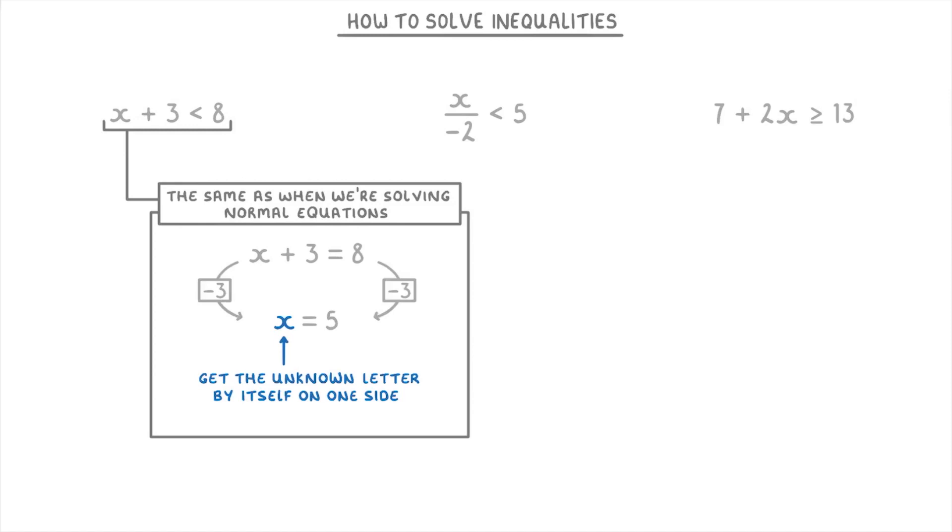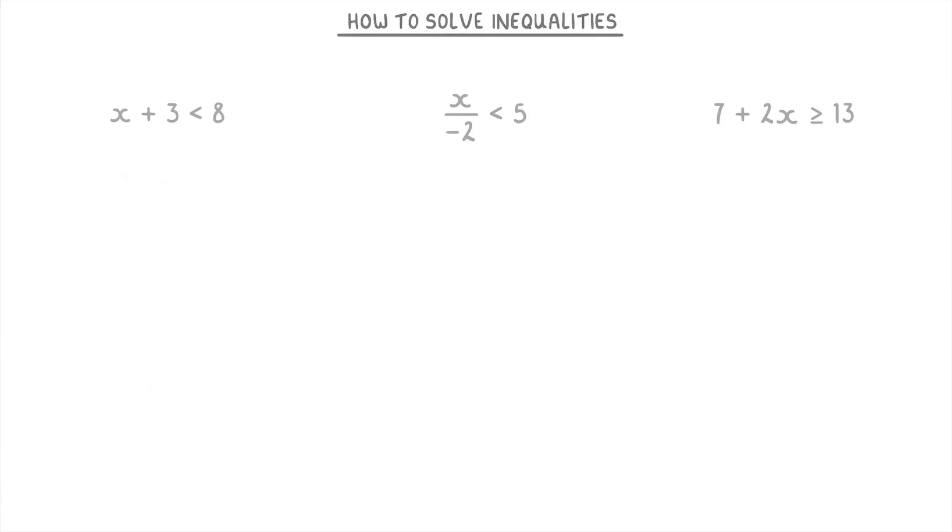In this first inequality, x + 3 is less than 8. To get the x on the left by itself, we're going to have to subtract 3 from both sides to find that x is less than 5.